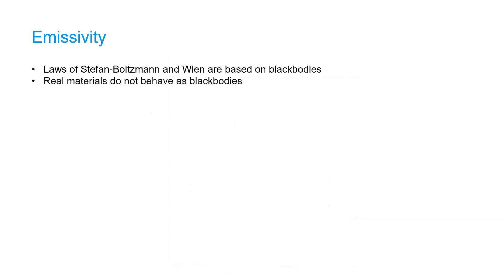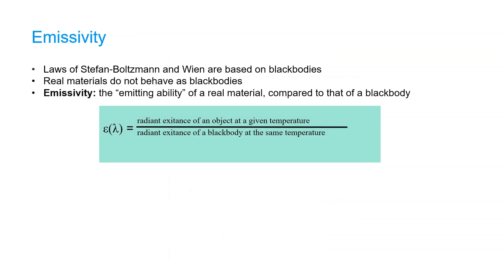Until now we've been looking at physical laws that are based on black bodies. Real materials, however, do not behave as black bodies. We need to correct using emissivity, which is the emitting ability of a real material compared to that of a black body. It can be calculated by taking the radiant existence of an object at a given temperature, divided by the radiant existence of a black body at the same temperature.